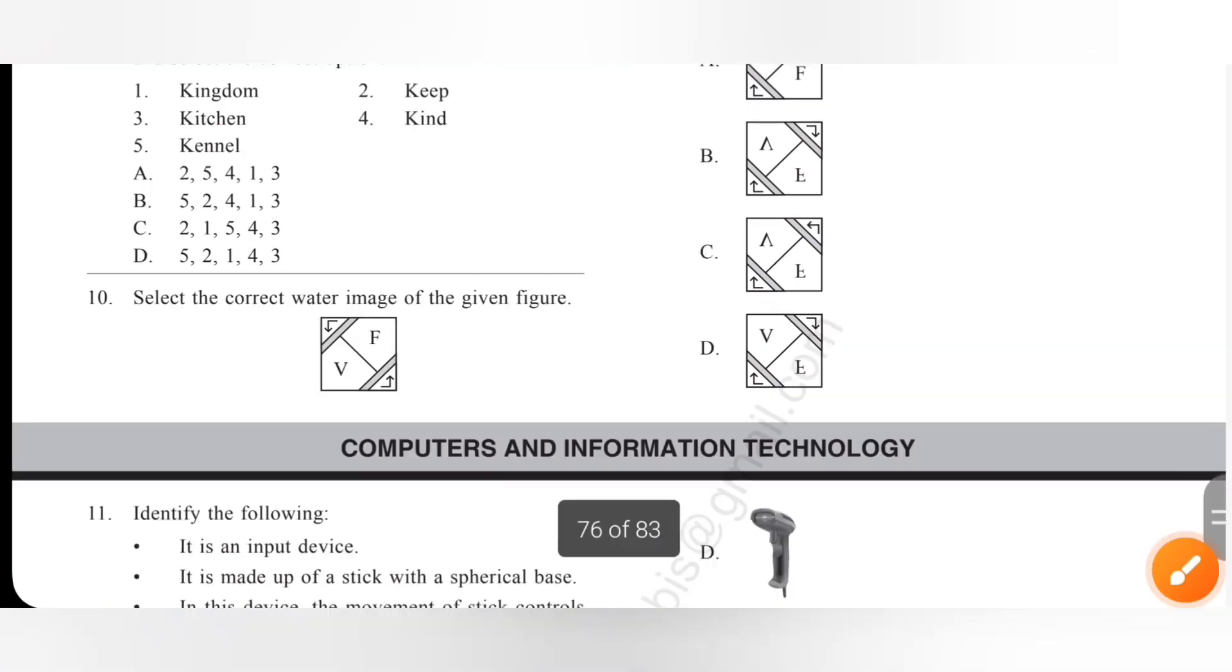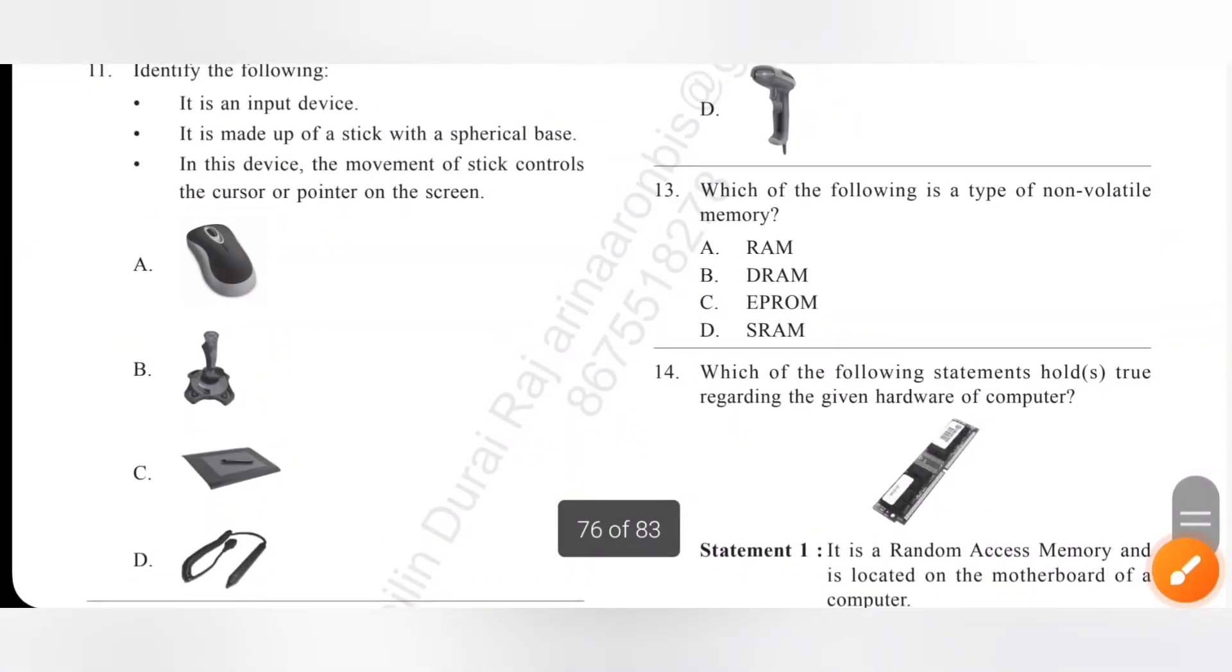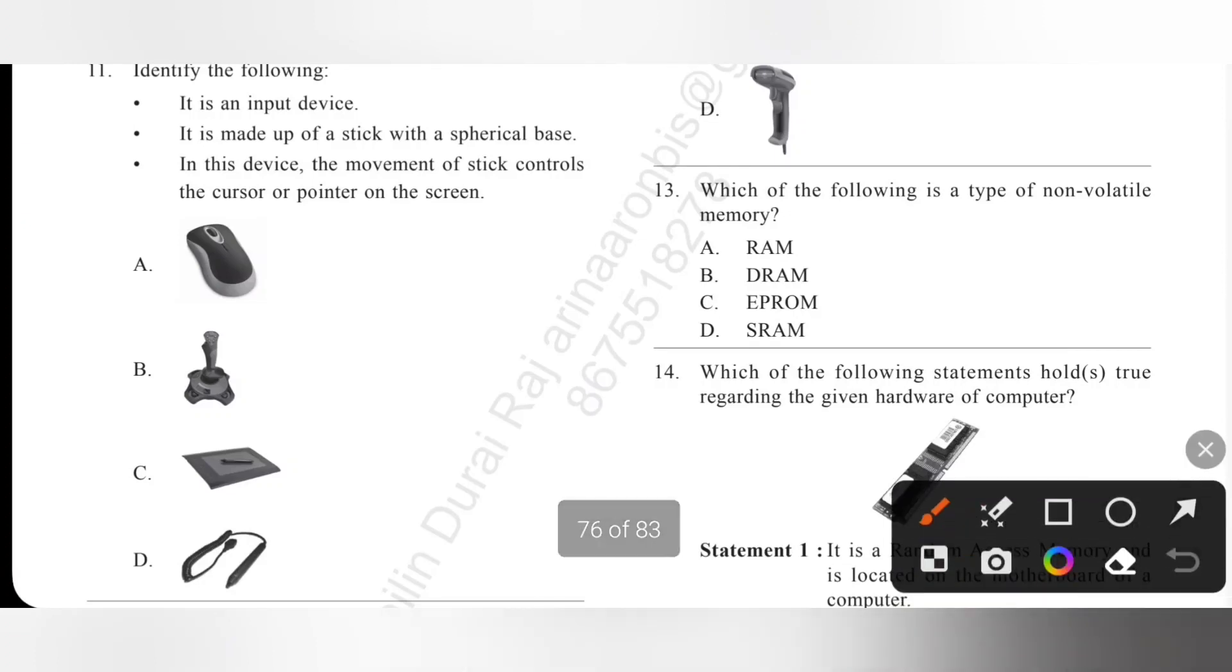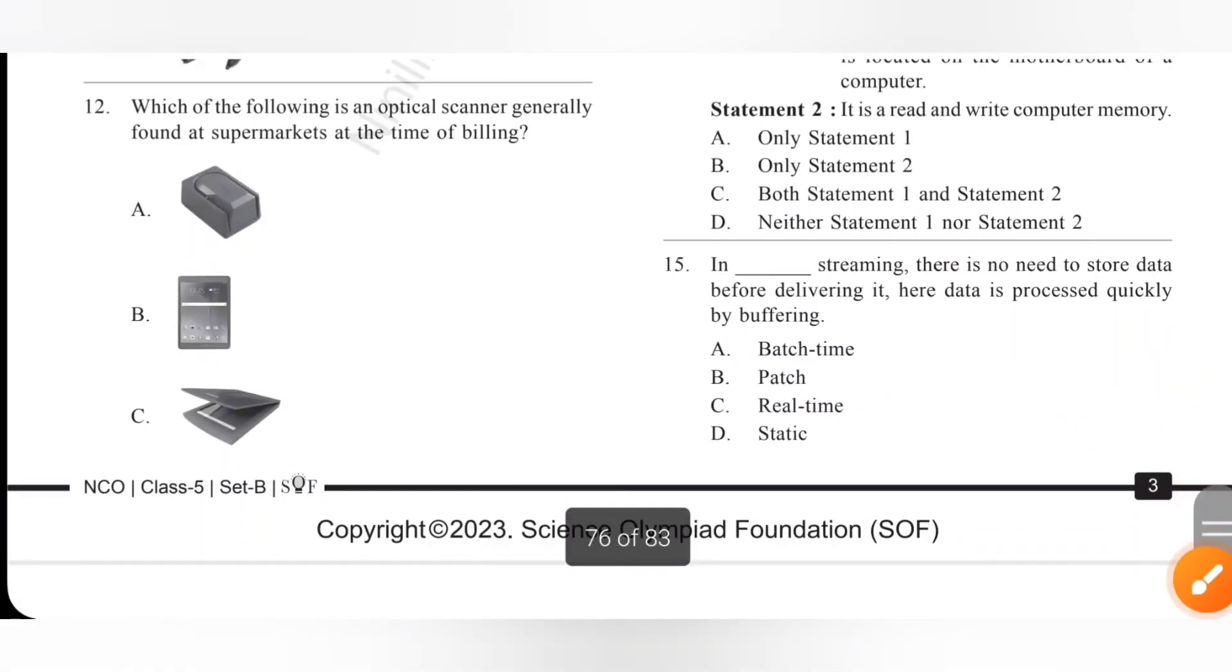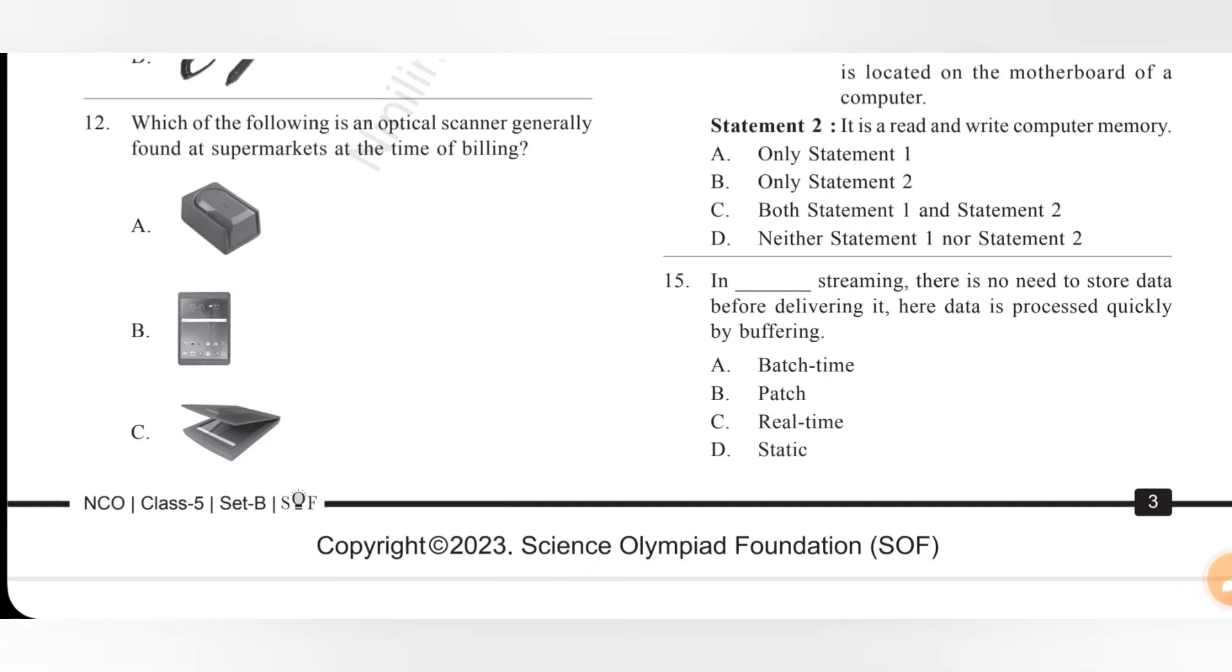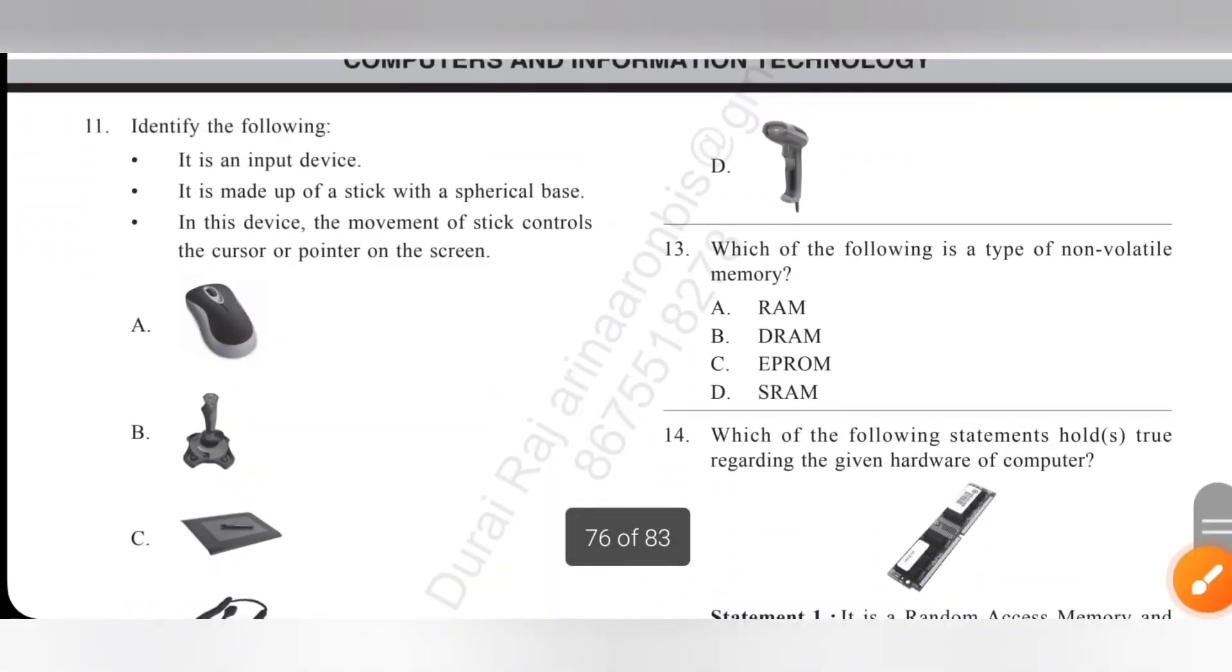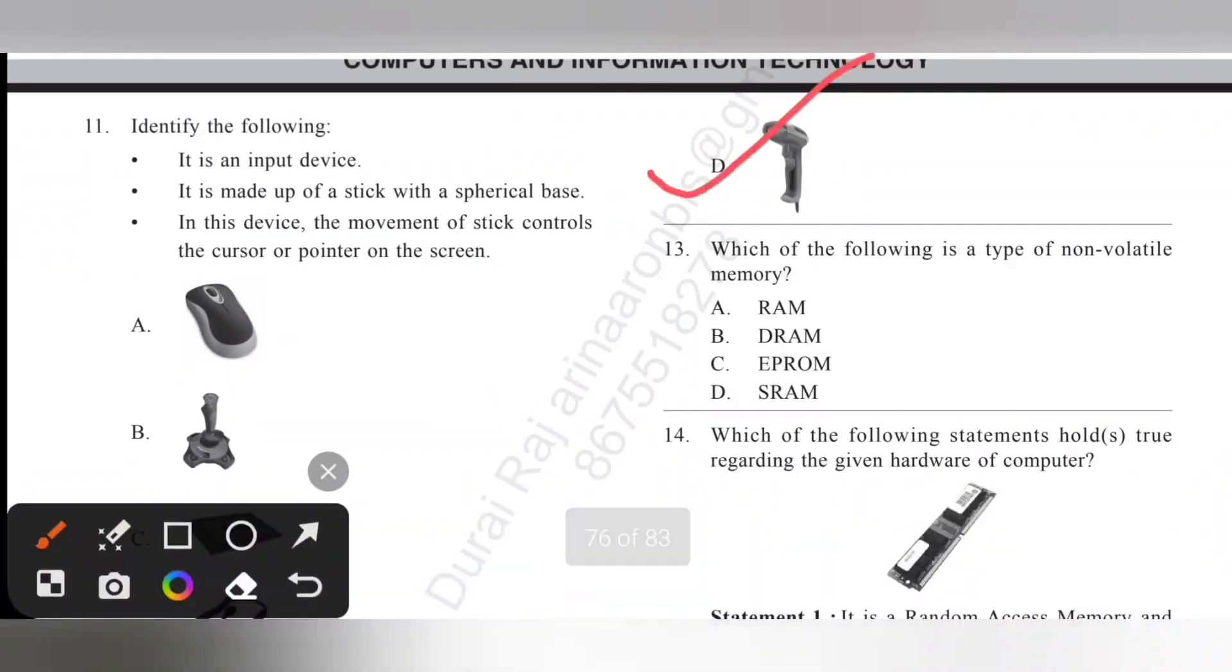Next, computers and information technology. Eleventh one, identify the following. It is an input device, made up of a stick with a spherical base. In this device the movement of stick controls the cursor or pointer on the screen. It is trackball. Option B is the correct answer. Twelfth one, which of the following is an optical scanner generally found at supermarkets at the time of billing? D is barcode scanner. Option D is the correct answer.